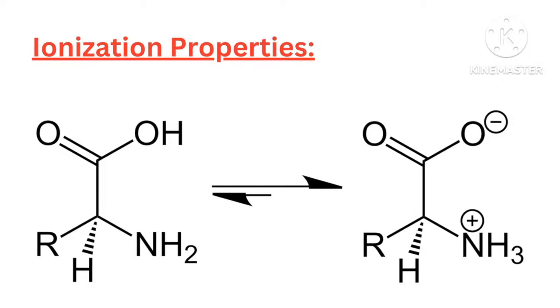Specialized structural features in some amino acids. Proline has a cyclic structure where the amino group is part of the side chain.